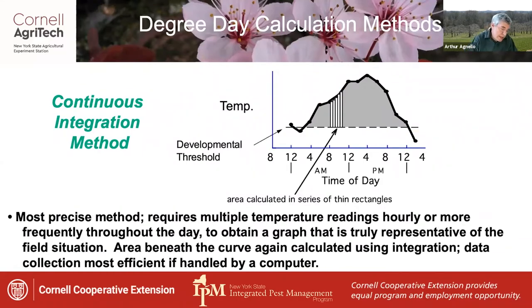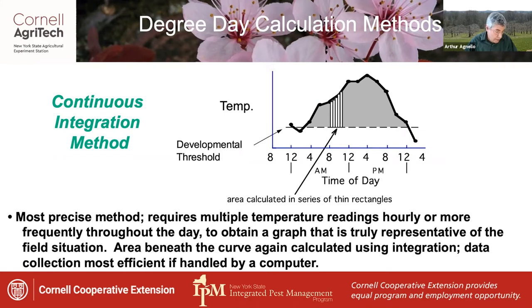Most precise is the continuous integration method. This requires multiple temperature readings — hourly or even more frequently — throughout the day to produce a graph that's truly representative of the field conditions. The area beneath the curve is calculated using integration, which is normally handled by a computer.